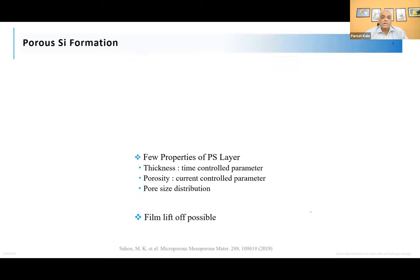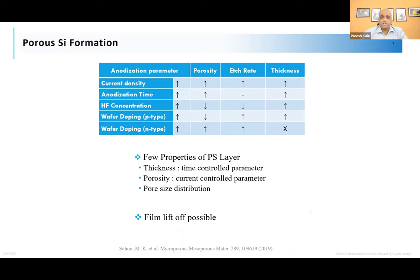The key output parameters of porous silicon are: thickness — controlled by anodization time; porosity — controlled by current density; pore size distribution — a complex parameter depending on many conditions; and film lift-off capability. Input parameters affecting these outputs include current density, anodization time, HF concentration, wafer resistivity, and doping type. Porosity can be varied from about 10% to 90%, though 90% yields a very brittle film. Thickness can be tuned from about 2 µm to 50 µm depending on time.